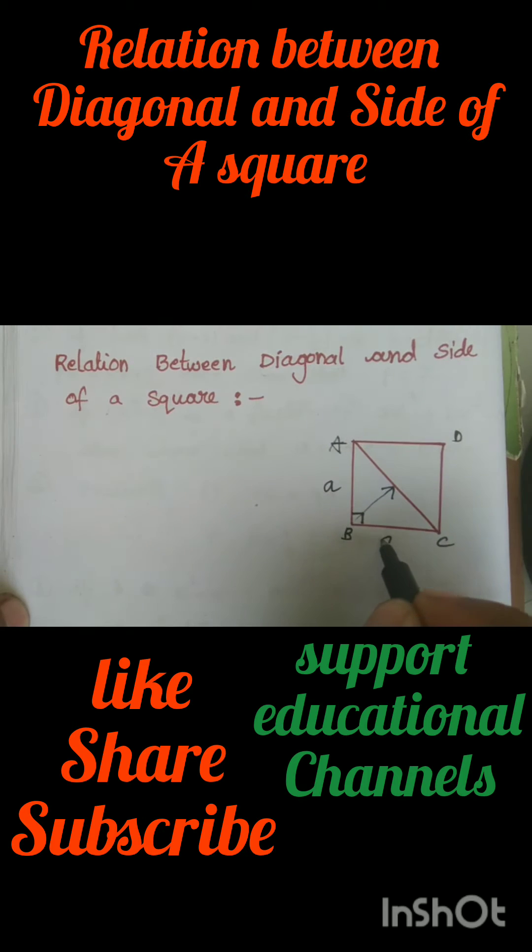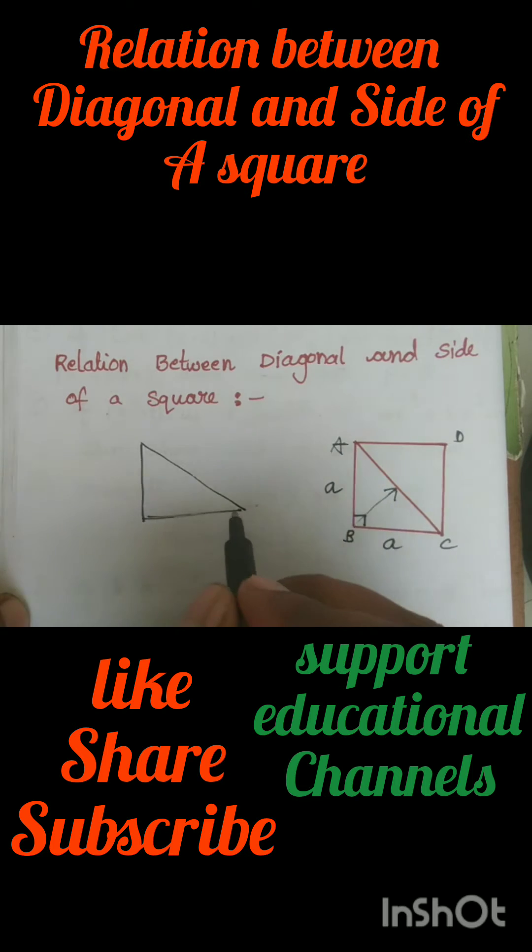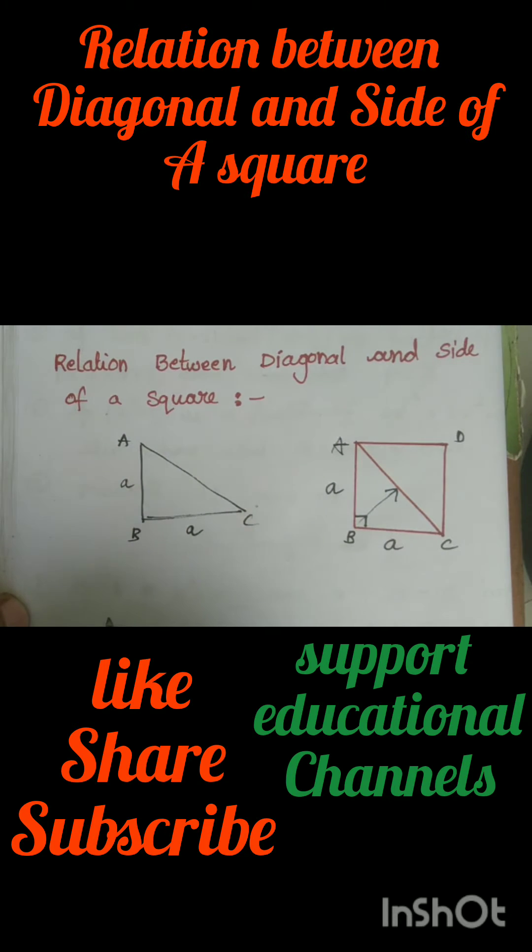Let the side of the square be a units. Now consider triangle ABC, which is a right angle triangle. So AC is our diagonal. Let the side AB be a units and BC also a units. By using Pythagoras theorem, square of hypotenuse is equal to side square plus side square.